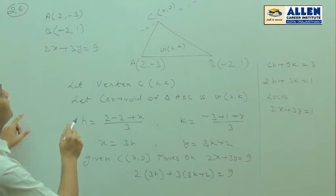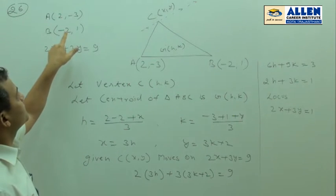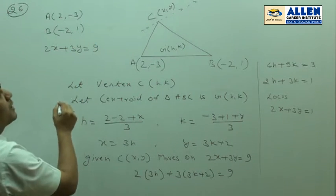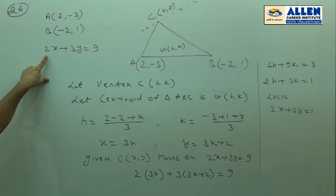In question number 26, we have been given two vertices of a triangle: vertex A (2, -3) and vertex B (-2, 1). And it is given that vertex C moves on the line 2x plus 3y equal to 9.